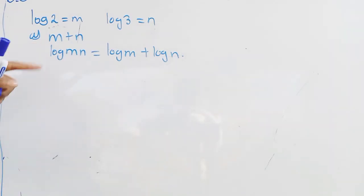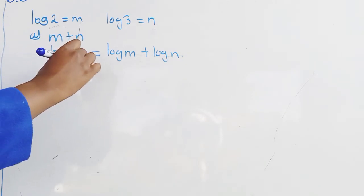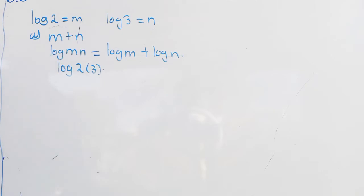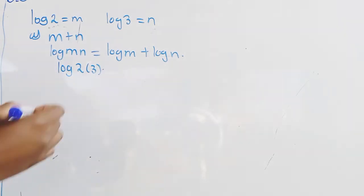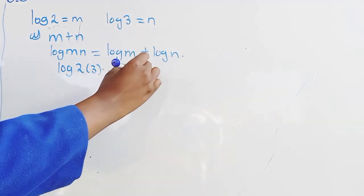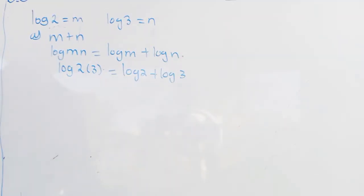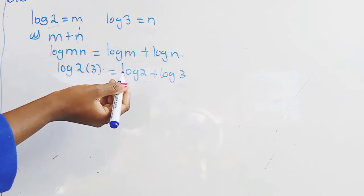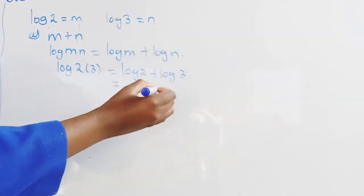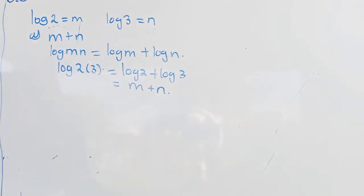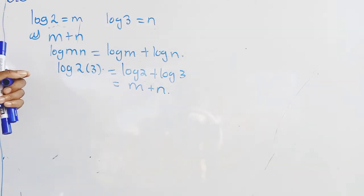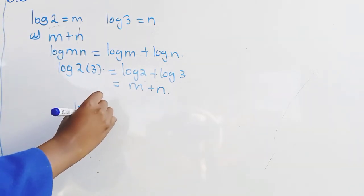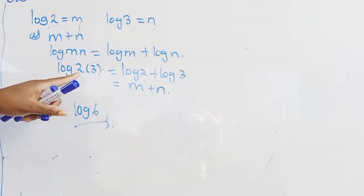Since we are given m plus n, it simply means that as a logarithm it was logarithm of two times three, which gives us logarithm of two plus logarithm of three. Logarithm of two is m and logarithm of three is n. So our final solution — to express m plus n as a single logarithm — is log 6.